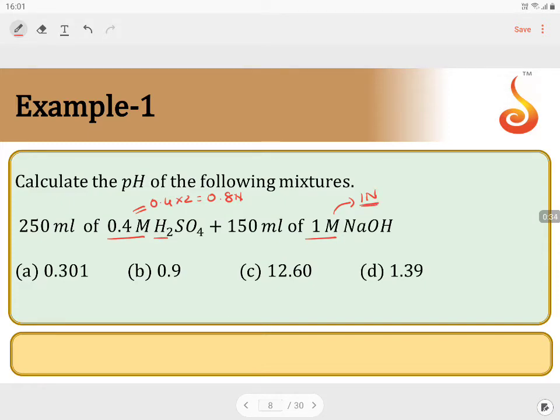Since the valency factor for H2SO4 is 2, we get 2 times 0.4. For NaOH it's 1. First, we find normality of acid times volume of acid: NAVA equals 0.8 times 250 ml.